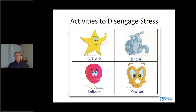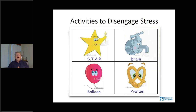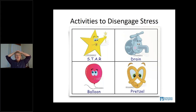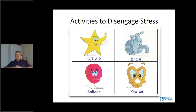Now, activities to disengage stress. There are four different breathing strategies — star, balloon, and others. Let's do balloon breathing together right now. Sit up nice and tall. When we do deep breathing, we breathe in through our nose and out through our mouth. For balloon breathing: hands on your head, fill up your balloon by breathing in through your nose, then let the air out. We always do breathing three times.